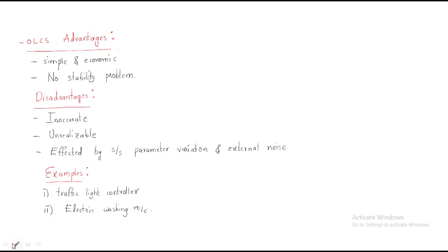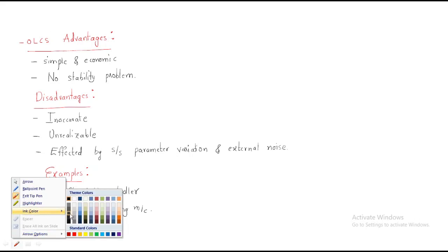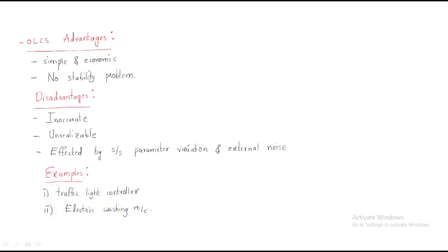Looking at the open-loop control system advantages: first, it is simple and economic. Why? Because it has just input, system, and output — we are not adding any feedback — so that's why it is very simple as well as economic.